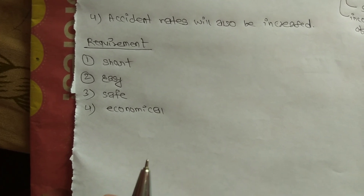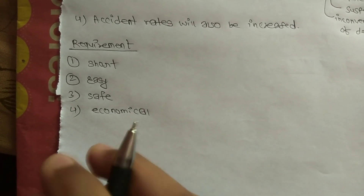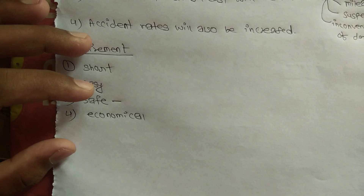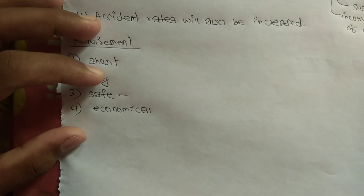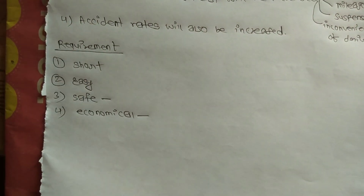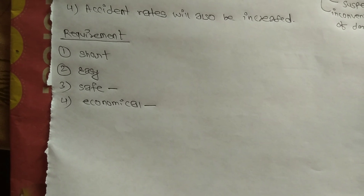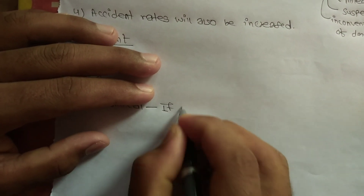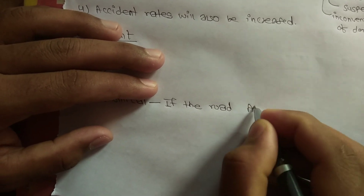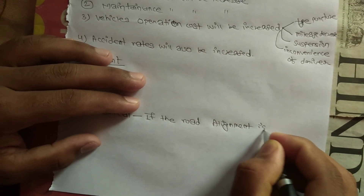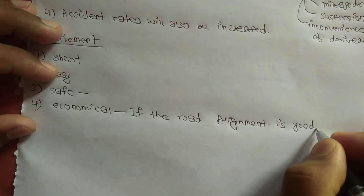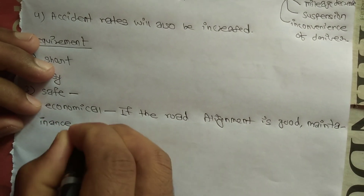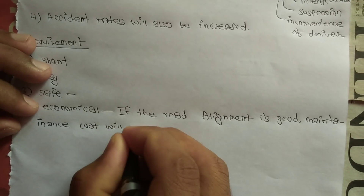Short means the distance between the two terminal stations should be short. Easy means the alignment should be such that it is easy to construct and maintain the road with minimum problems. Safety means we have to follow safety rules in the highway alignment. Economical means if the road alignment is good, then maintenance cost will decrease and vehicle operation cost will decrease.